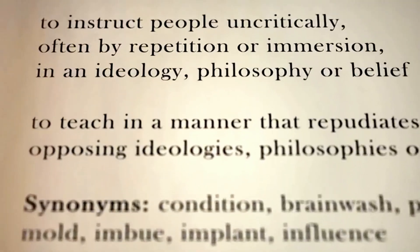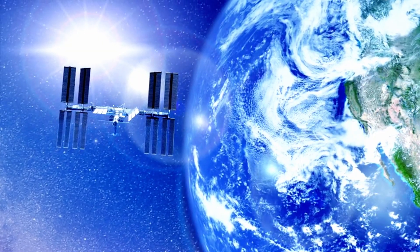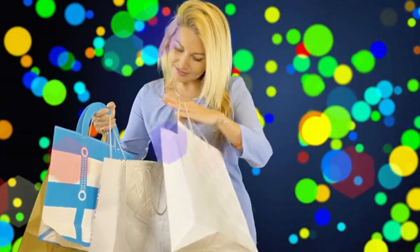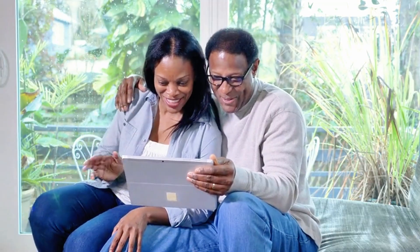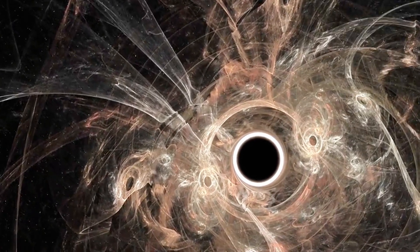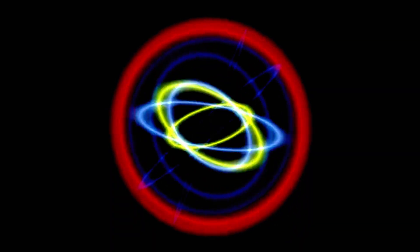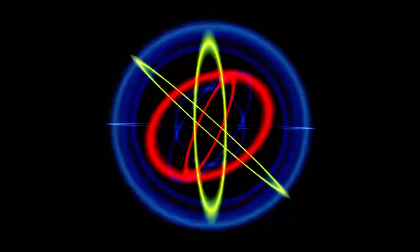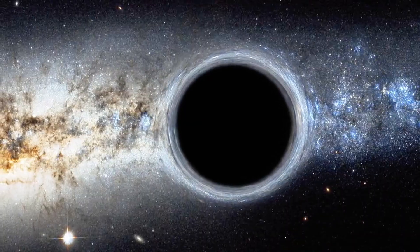Today, relativity is not just theory — it's part of your everyday life. GPS satellites must account for both special and general relativity. Without corrections, your phone's GPS would be off by miles within a single day. Every time you navigate with Google Maps, Einstein is working behind the scenes. But relativity goes deeper. Black holes are perhaps the most extreme consequence of Einstein's equations — regions where space-time is bent so strongly that nothing, not even light, can escape. What's inside? A singularity: a point where our laws of physics break down. And yet, without relativity, we wouldn't even know black holes exist.